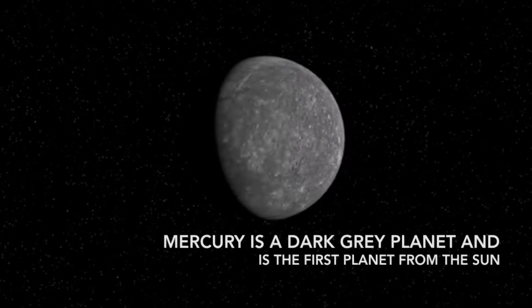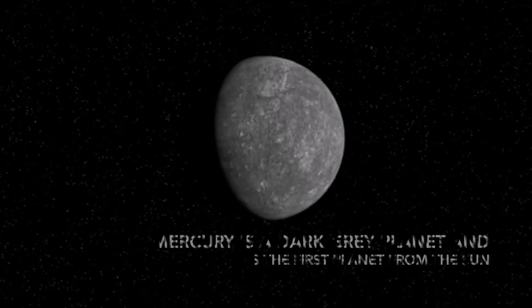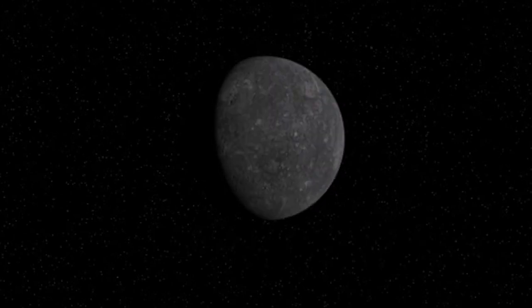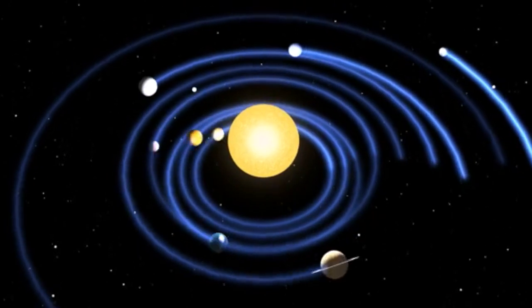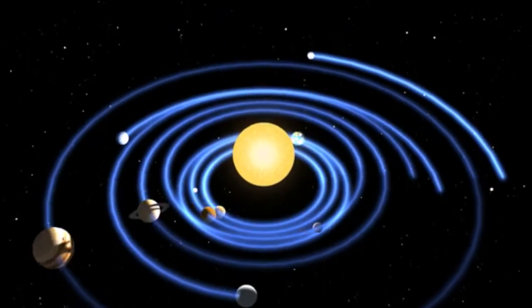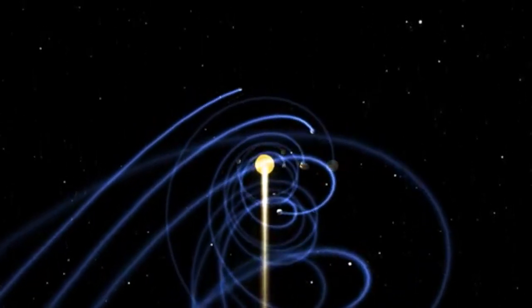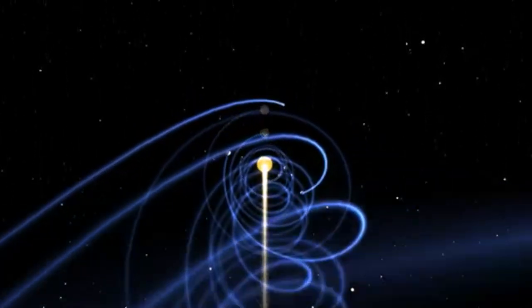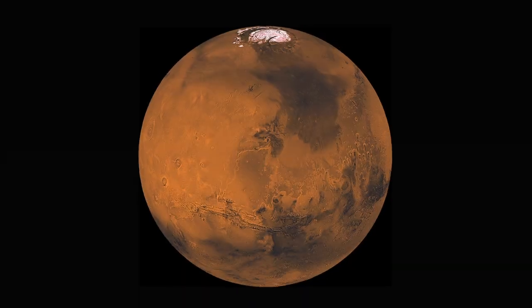Mercury is a dark grey planet and it's the first planet from the Sun orbiting at an average distance of 58 million kilometres, which is roughly a third of the distance from the Sun to Earth. Not only is it the innermost planet, but it's also the first of the rocky planets which includes Mercury, Venus, Earth and Mars.